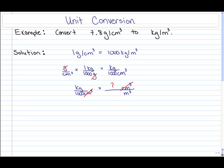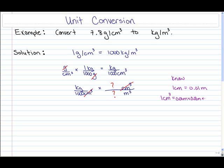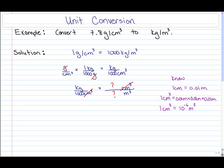So what are the question marks in our conversion? We know that one centimeter is equivalent to 0.01 meters. So one cubic centimeter would be equivalent to 0.01 meter times 0.01 meter times 0.01 meter, which works out to 10 to the negative 6 cubic meters. So one cubic centimeter is equivalent to 10 to the negative 6 cubic meters.